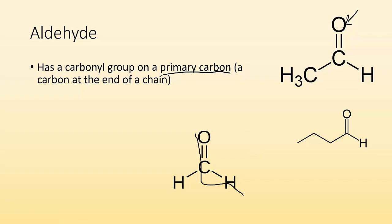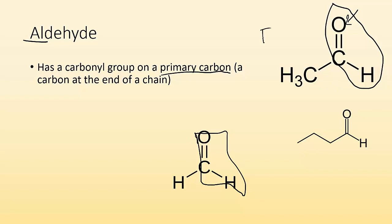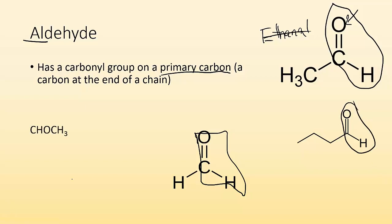For aldehydes, you're looking for a carbon double bond O, and off of that carbon is a hydrogen. The suffix for these is AL. In the condensed structural formula it'll be written as CHO — so CH, then O, then CH3. There must be a double bond between the oxygen and the carbon.